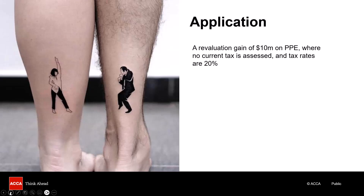That taxation expense will be recognized wherever the gain is recognized — probably in equity, probably in other comprehensive income, where the majority of gains on PPE are recognized. Having thought about the debit and the expense, you then have the corresponding deferred taxation liability. That payment of tax will occur in the future; we're recognizing an additional deferred taxation liability. We're debiting the tax expense and crediting the deferred taxation liability.